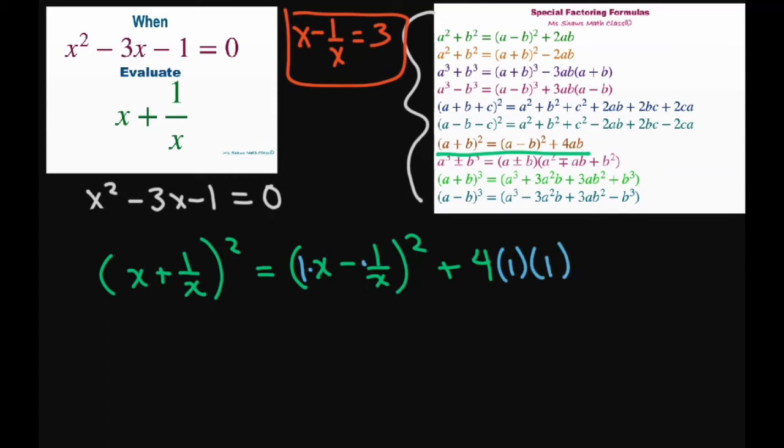So therefore this is going to equal—we already know this equals 3—so it's going to be 3² + 4 = (x + 1/x)². And this equals 9 + 4 = 13. Now we're going to square root both sides, so you get √13.